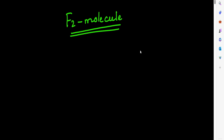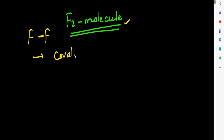Welcome back. Today we are going to discuss the F2 molecule — how the fluorine molecule forms. In F2 there are two fluorine atoms, and between them there is a single covalent bond, which means sharing of electrons takes place between the two fluorine atoms.